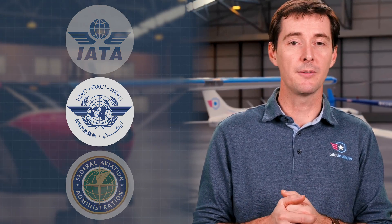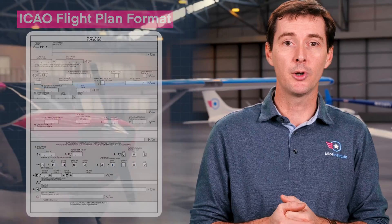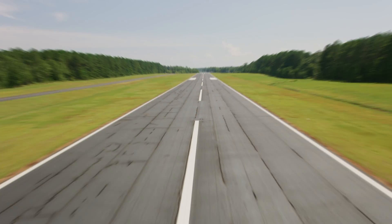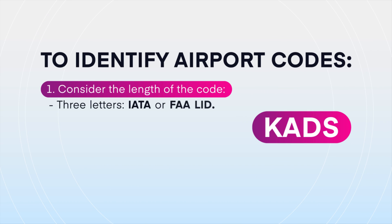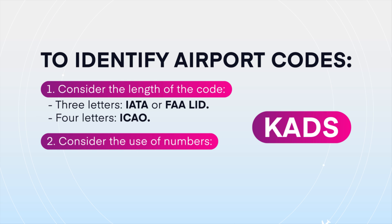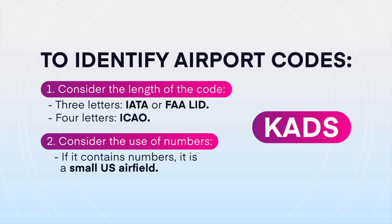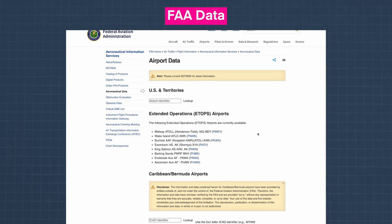Now that you know all three types of airport codes, how do you actually use these as a pilot? First, you need to know which type of airport code to use. As a pilot, you'll use ICAO codes most of the time. The FAA adopted the ICAO flight plan format in 2019, which means you'll use ICAO codes for flight planning. But FAA flight plans still accept LIDs, especially for small airfields and private airstrips that don't have an ICAO code yet. You still need to identify what type of airport code you're looking at. The first clue is the length of the code — a three-letter code cannot be an ICAO airport code. Next, see if the code contains any numbers; IATA and ICAO codes only consist of letters, so if there's a number, it's probably a small US airfield. If you've only got three letters, it's probably an FAA LID or an IATA code. Many LIDs are the same as their corresponding IATA code, but there are exceptions — searching the FAA database will give you the right answer.